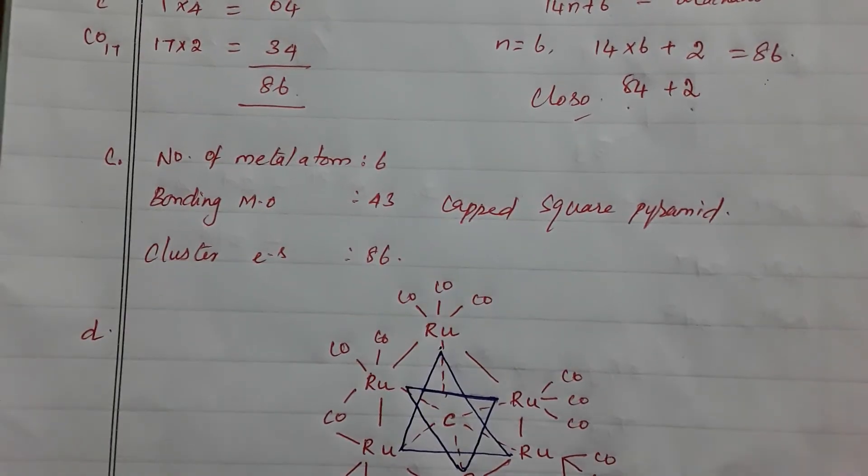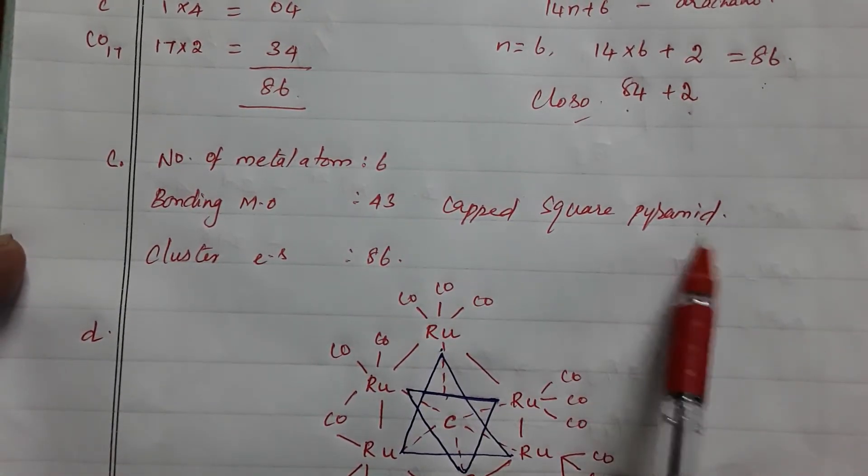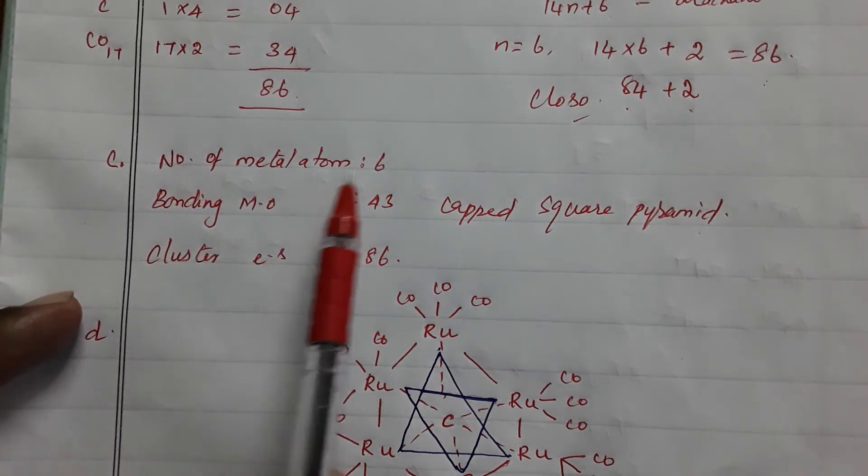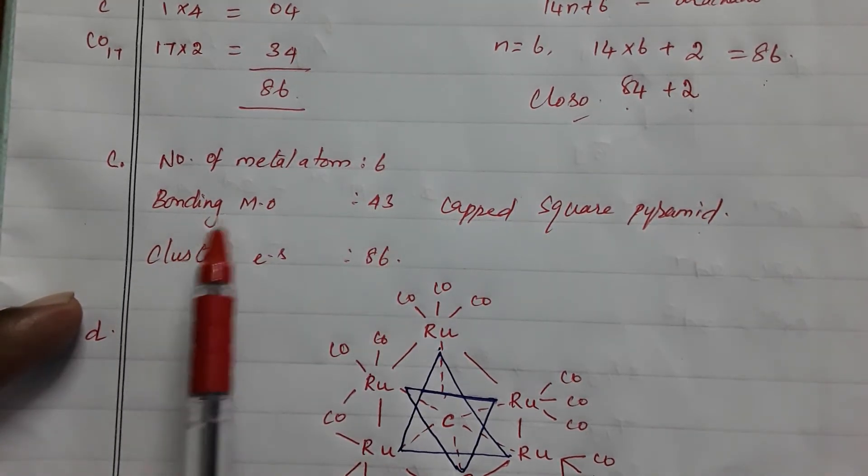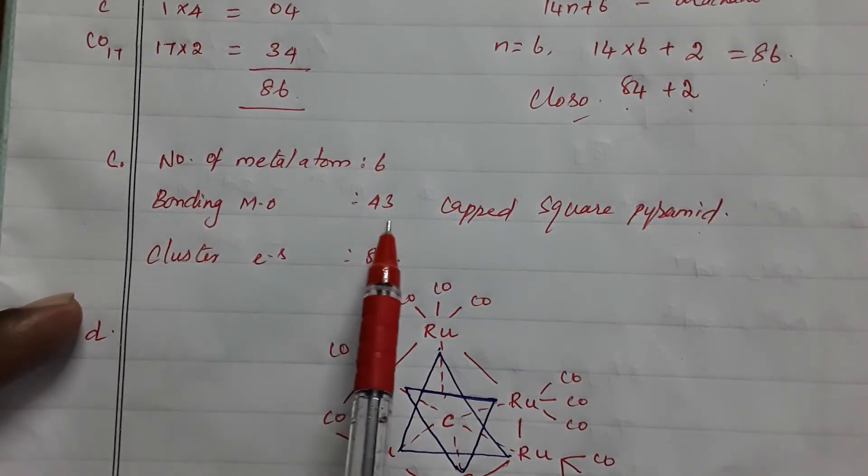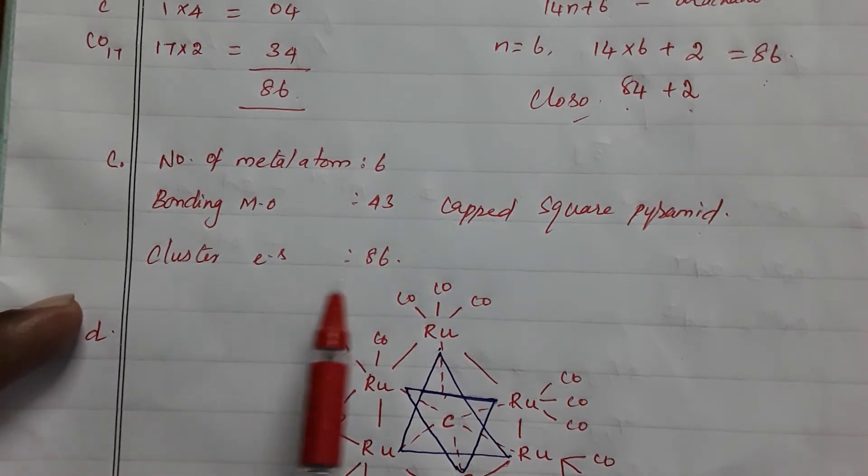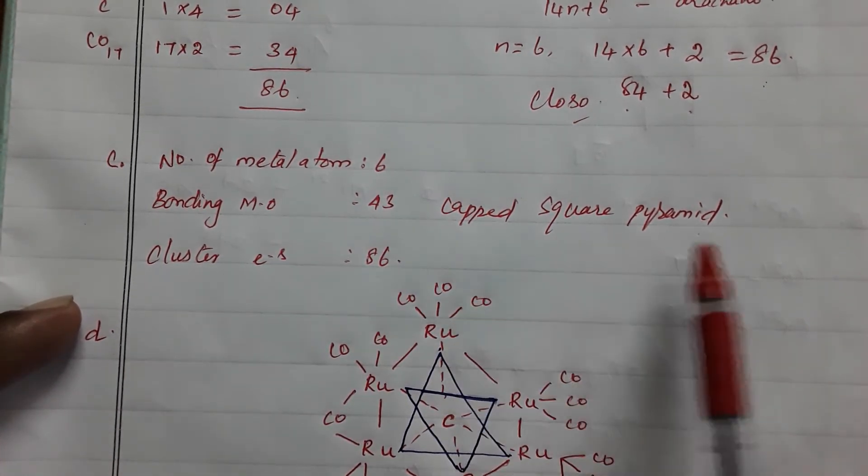Statement C: it is capped square pyramidal. This is also correct because if the number of atoms is 6, bonding metal-metal orbitals are 43, and cluster electrons are 86, then the shape is capped square pyramidal.